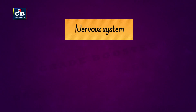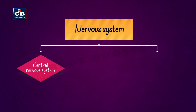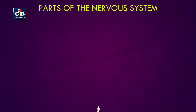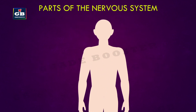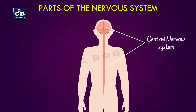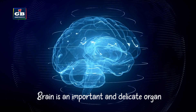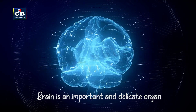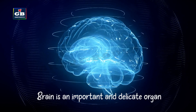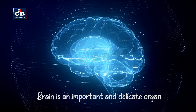The nervous system is divided into the central nervous system and the peripheral nervous system. The central nervous system consists of the brain and spinal cord. The peripheral nervous system consists of nerves.